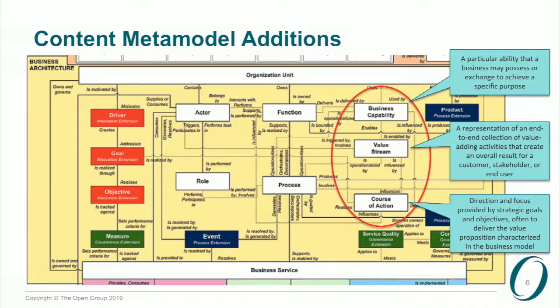The key advancements. There are three things in the meta model you'll see repeat: those familiar with the meta model before will notice three key additions - business capability, value stream, and course of action. I put the model up because these are going to be referenced and mentioned in the advancements work as we go forward.